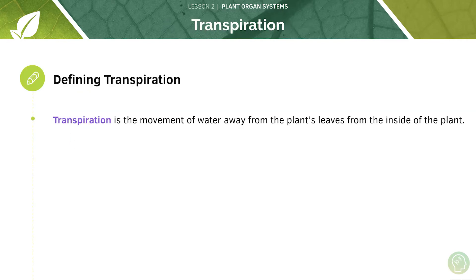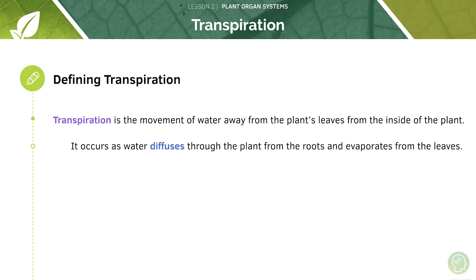Transpiration is the movement of water away from the plant's leaves, from the inside of the plant. It occurs as water diffuses through the plant from the roots and evaporates from the leaves. When water is taken up through the roots, it moves through the plant in the xylem and reaches the leaves, from which it evaporates. The evaporation of water from the leaves causes a shortage of water in the plant, creating a backlog — the plant requires more water, which allows more water to be taken up from the roots.